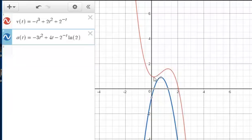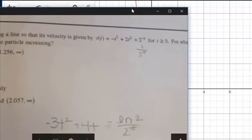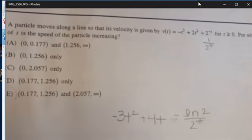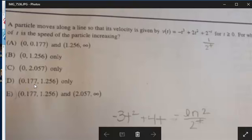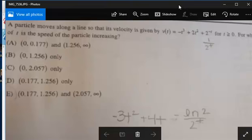So we do want to include that interval. If we look at the original problem here, we know we want to go 0.177 to 1.256. So we've already got it narrowed down to D or E. Let's talk about this interval here, because here's where the difference between speed versus velocity comes in.